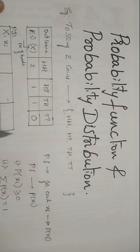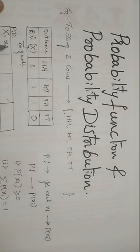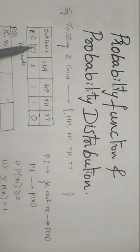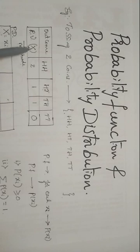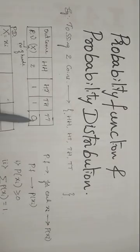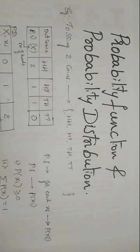Next, this box gives the detail about the probability distribution. Here we need to write the Xi values — Xi is the value being taken by the random variable X. The values are 2, 1, 1 — since 1 is repeated, we write it once. Let me write them in increasing order: 0, 1, and 2.